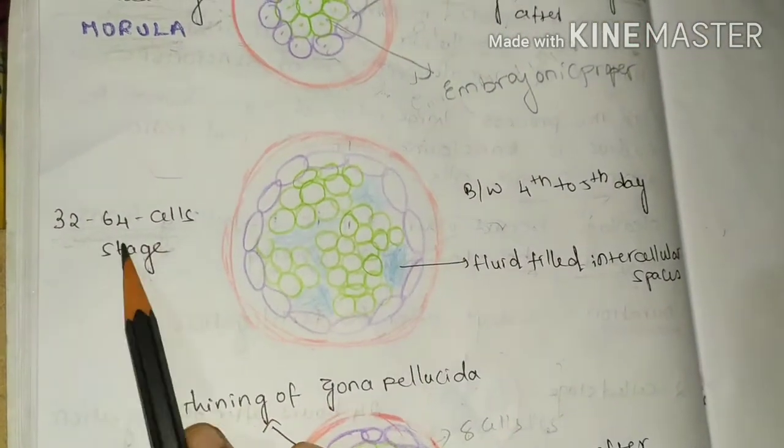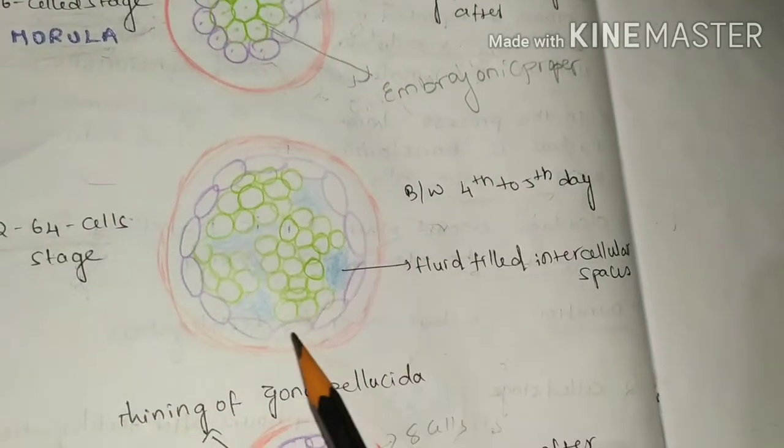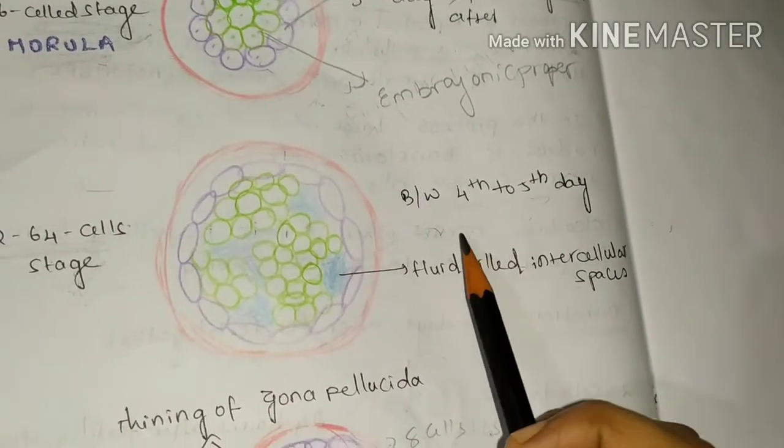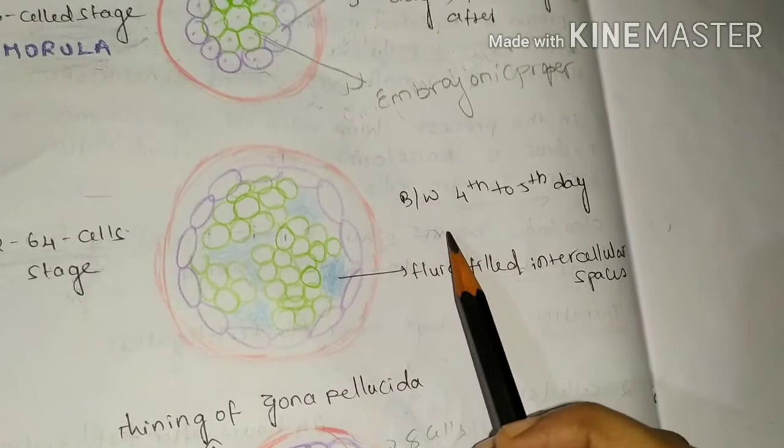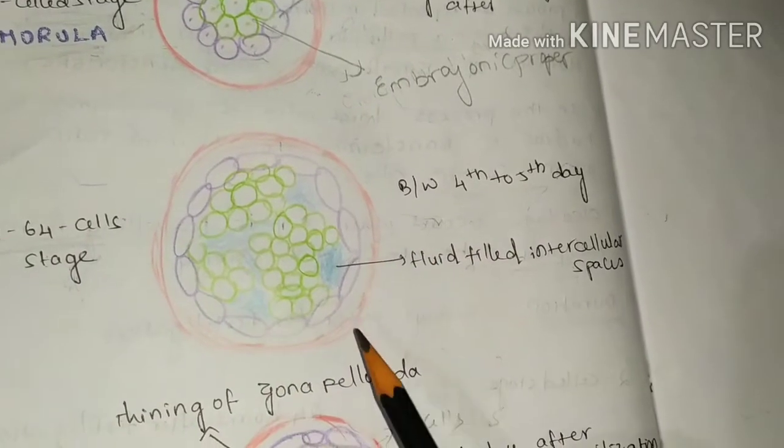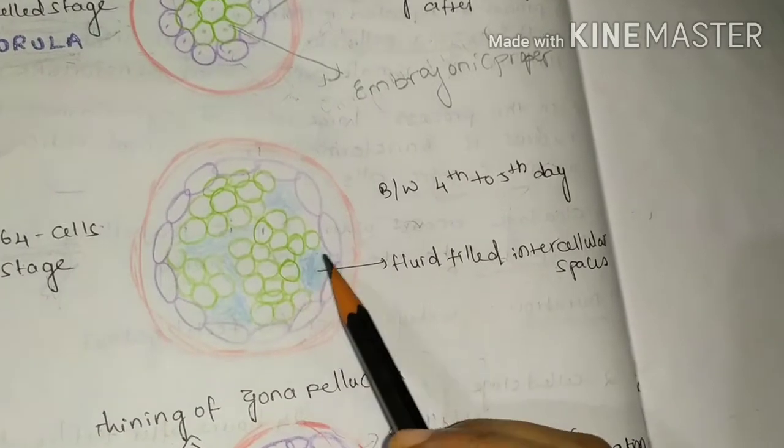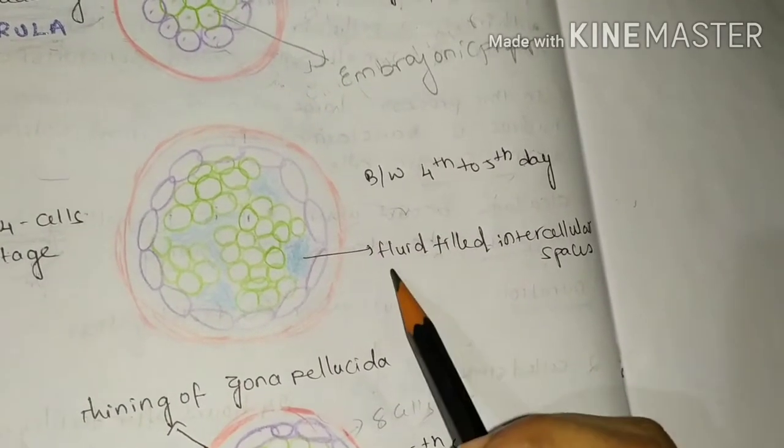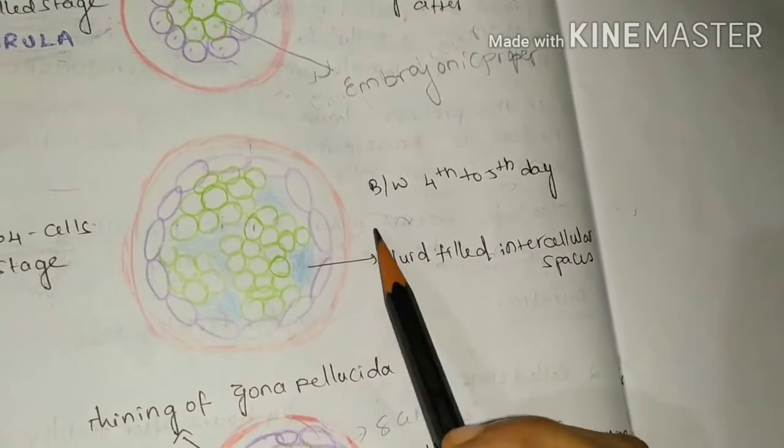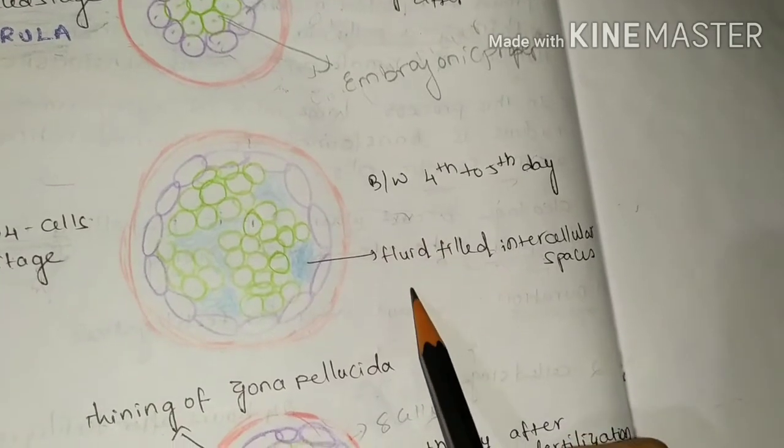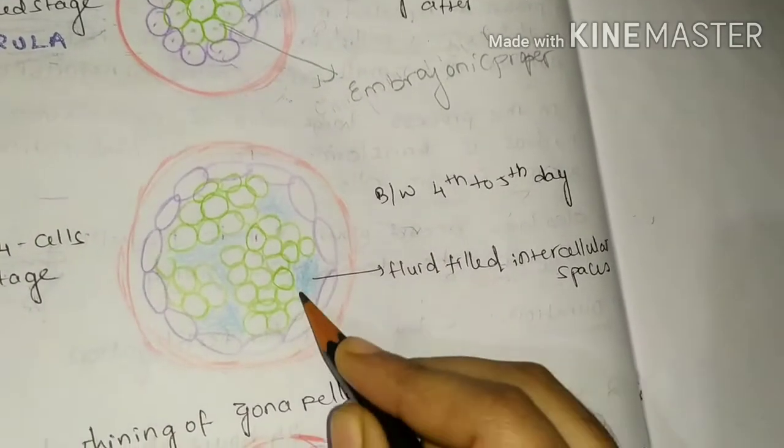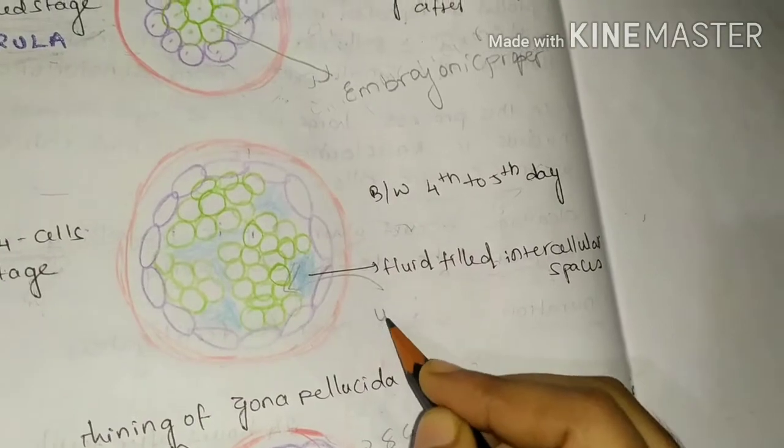Next stage is 32 to 64 cell stage. This stage is formed between fourth to fifth day after fertilization. In this stage, this stage reaches the uterine cavity. And the fluid in the uterine cavity enters into the structure by piercing the zona pellucida and forms fluid-filled intercellular spaces. The uterine fluid is rich in nutrients, hence the fluid which is entering in the structure is also called as uterine milk.